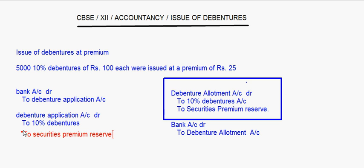Now as far as issue of debentures at premium is concerned, let's look at issue of debentures at discount. In this case, the discount is always allowed at the time of allotment, whether the question says anything about it or not. The discount is always with the allotment money. Let's take up a small case.